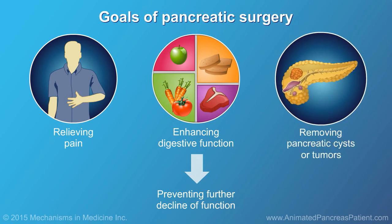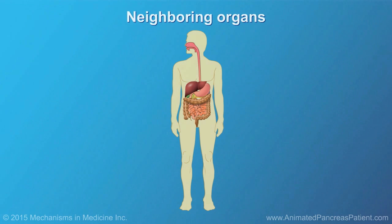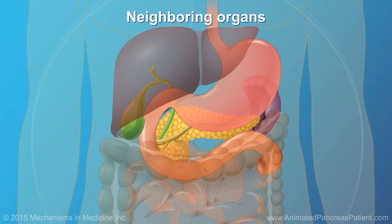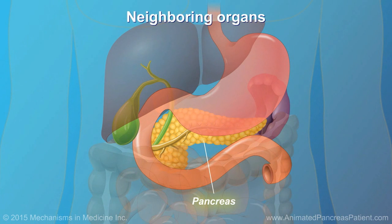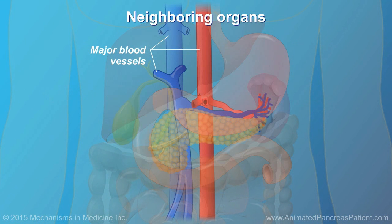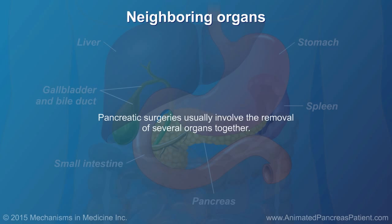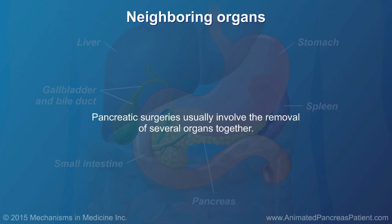Additional goals include removing pancreatic cysts or tumors. The pancreas is located in an anatomically complex region of the body, where neighboring organs are closely associated and share the same blood supply. As a result, pancreatic surgeries usually involve the removal of several organs together.